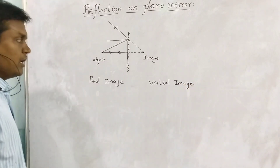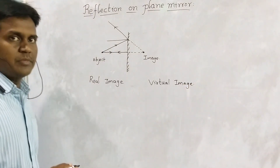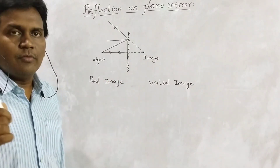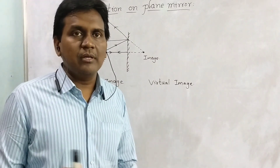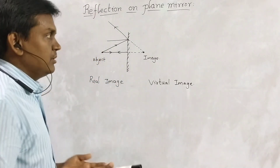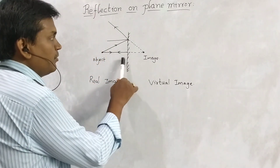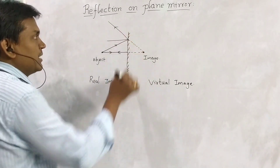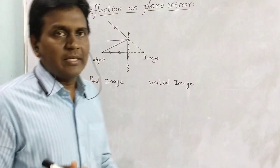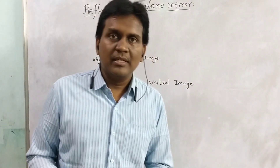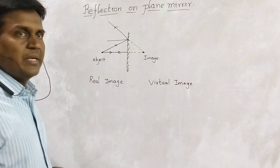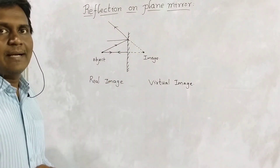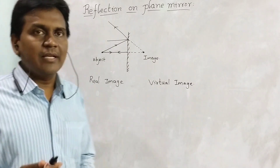Let us see how the real image forms for a plane mirror. If you are standing in front of a mirror, we will observe our image there, and the image will form behind the mirror. The mirror has a reflecting surface and the back side is silver coated, which is why it acts as a mirror.